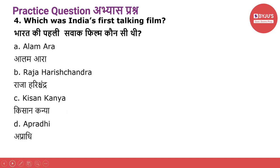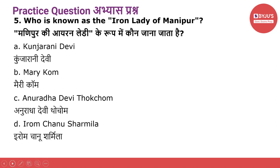Practice question number four: Which was India's first talking film? भारत की पहली सवाक फिल्म कौनसी थी? Option A: Alam Ara. Option B: Raja Harishchandra. Option C: Kisan Kanya. Option D: Aparadi.